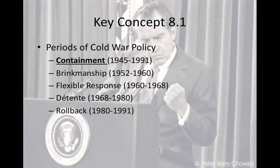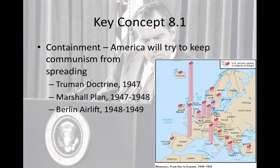Containment is seen through events like the Truman Doctrine, where America pledged money to Greece and Turkey to help avert communism. The Marshall Plan gave a lot of money to Western European countries to prevent communism from spreading there. And the Berlin Airlift was a result of Stalin closing off Allied access to Berlin, with Americans dropping supplies from the sky to allow the people in West Berlin to live. Those are examples of containment, which is seen throughout the entire period.